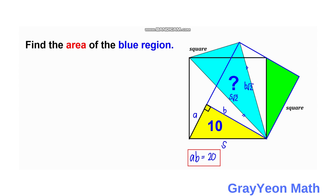Next, we want to find this angle — let's call it angle M. Since we have a yellow right triangle, let us call this angle theta. Since this is 45 degrees (being the diagonal of the black square), this angle will be 45 minus theta.